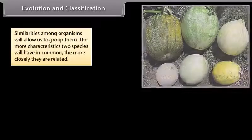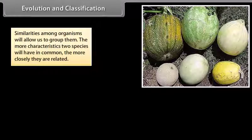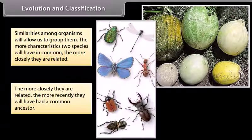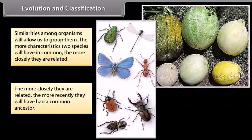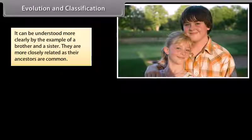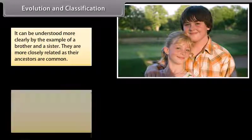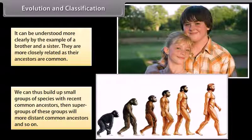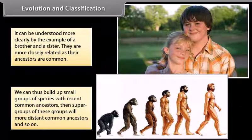Evolution and classification: Similarities among organisms will allow us to group them. The more characteristics two species have in common, the more closely they are related. The more closely they are related, the more recently they will have had a common ancestor. We can build up small groups of species with recent common ancestors, then supergroups of these groups with more distant common ancestors and so on.